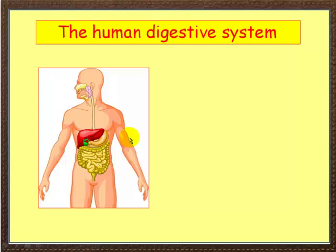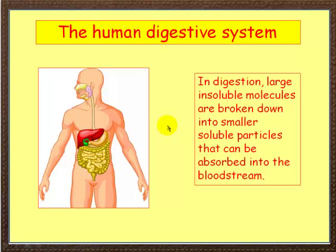Here is the human digestive system. What's happening in digestion is that large insoluble molecules are being taken in and they're being broken down into smaller soluble particles that can be absorbed into the bloodstream.